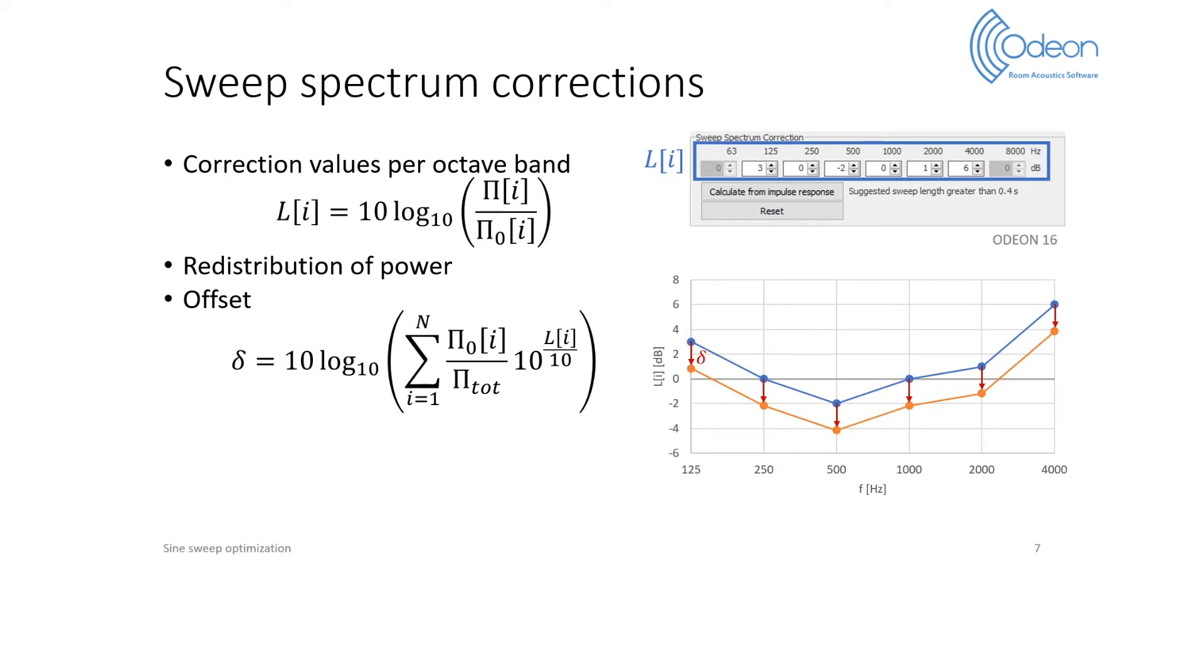After the offset, the power corrections have the same variations, but they are centered on zero as shown on the graph. Additional constraints are also applied to the corrections. Firstly, the power in one octave band should remain smaller than the total power.